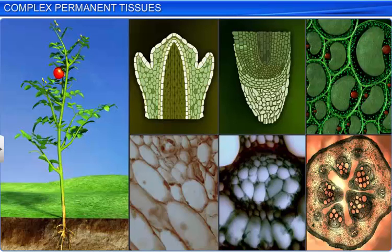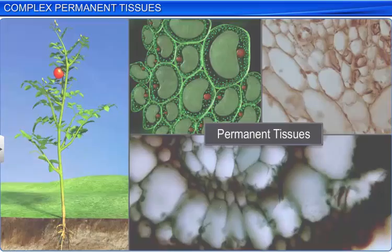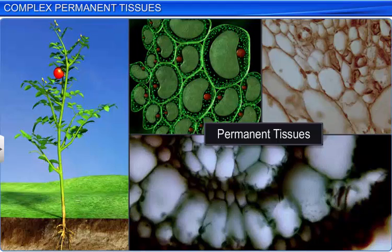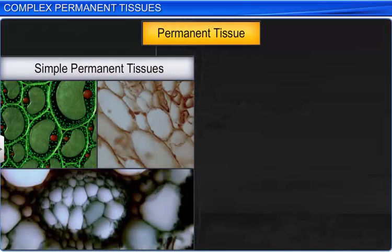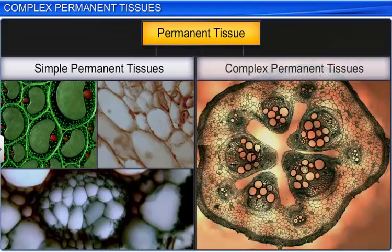Like all living organisms, the cells in a plant are also grouped into various tissues. Permanent plant tissue is a group of cells which are complete in growth and usually incapable of meristematic activity. Permanent plant tissue is of two types: simple permanent tissues and complex permanent tissues.